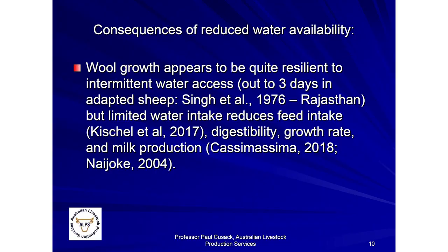Wool growth appears quite resilient to intermittent water access. In northern India in Rajasthan, they found no effect on wool production with intermittent access to water out to three days in sheep adapted to that regimen.